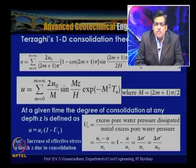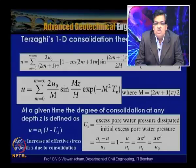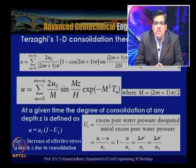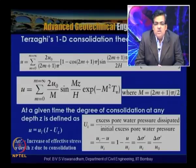At any time t slightly greater than zero, Uz = 1 at the boundaries because consolidation commences there first — pore water pressure dissipates completely at the open boundaries, and the increase in effective stress equals Δσ'. At any given time, the degree of consolidation Uz = excess pore water pressure dissipated / initial excess pore water pressure, and u = ui(1 − Uz).